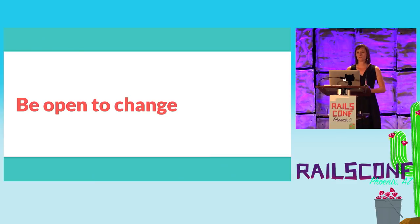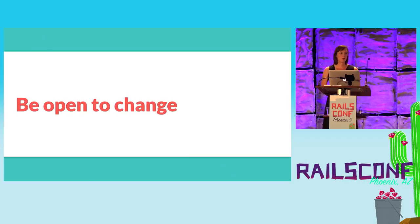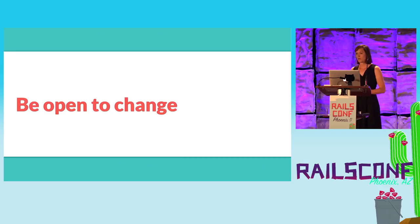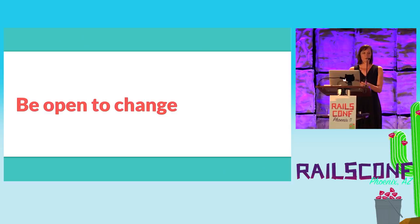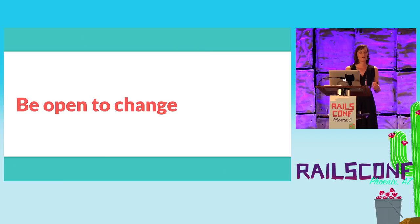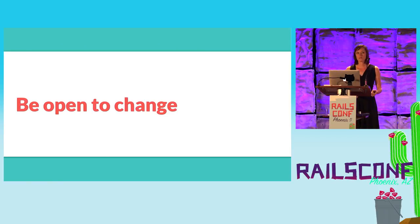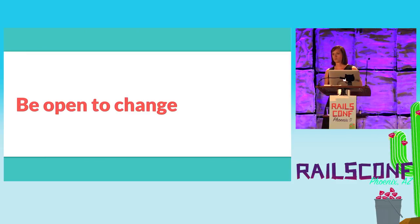When you're building open source features, you're building something for others. If you're open to suggestions, the feature might change for the better. It's really easy to get protective of code you worked so hard to write — I still have to fight the urge to be protective of system test code when someone wants to change it. But I have to remember that it's no longer mine and never was. It now belongs to everyone who uses Rails, so I need to be open to suggestions, tweaks, and changes.